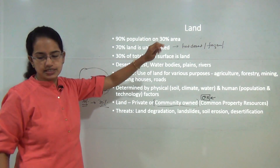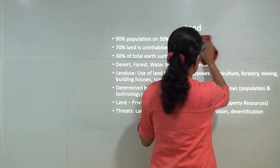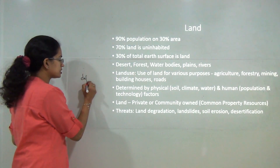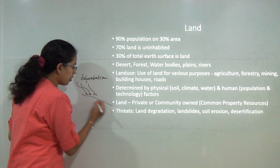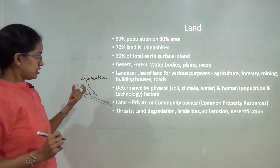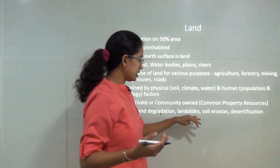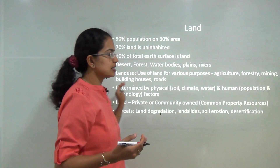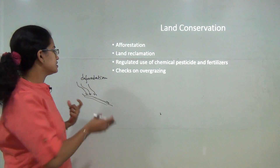The basic threats to land resources include deforestation and land degradation. Rapid deforestation causes rich topsoil to wash away during rainy seasons, decreasing soil fertility. In hilly areas, landslides and soil erosion are accentuated by deforestation. Desertification is another major issue. To conserve land, the primary solution to deforestation is planting more trees.